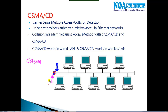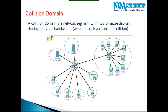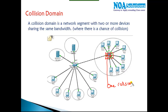When both devices send at the same time there is a possibility of collision, because there is only one road shared by all. We compare the collision domain to one road or one common network segment — one network segment equals one collision domain. In the case of hubs, there is only one collision domain — one network segment sharing the bandwidth — which means two devices cannot send at the same time; they must send one at a time, otherwise a collision occurs.